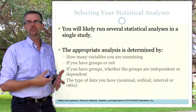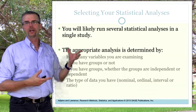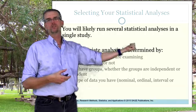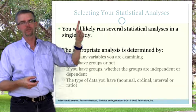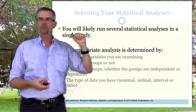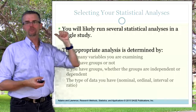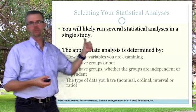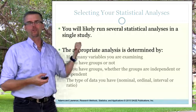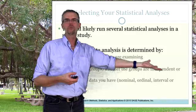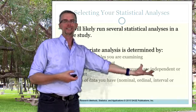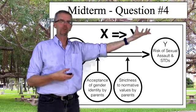You'll likely run into several statistical analyses in a single study. The appropriate analysis is determined by how many variables you're examining — cap it at three: one independent variable and two intervening variables maximum. Identify whether your groups are independent, dependent, or intervening, and determine the type of data: nominal, ordinal, interval, or ratio. Each variable will have its own unit of analysis — your dependent variable, independent variable, and intervening variables will each have clearly identified units of analysis.